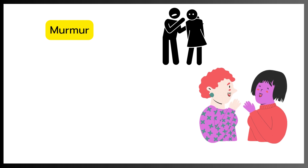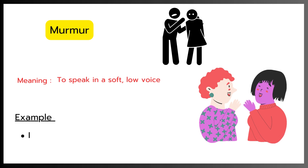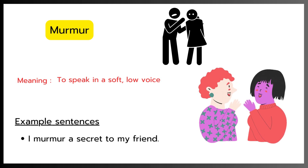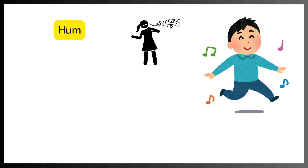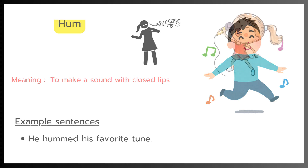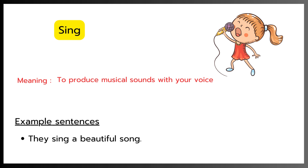Murmur. Meaning: To speak in a soft, low voice. Example: I murmur a secret to my friend. Hum. Meaning: To make a sound with closed lips. Example: He hummed his favorite tune. Sing. Meaning: To produce musical sounds with your voice. Example: They sing a beautiful song.